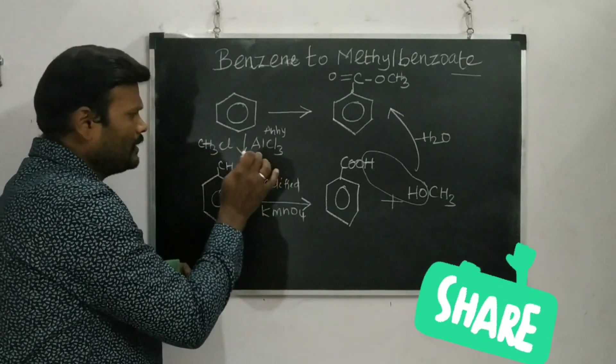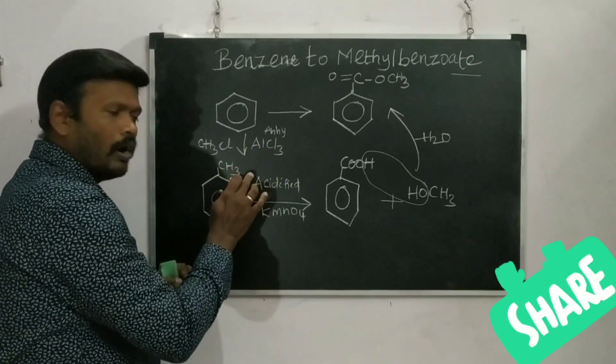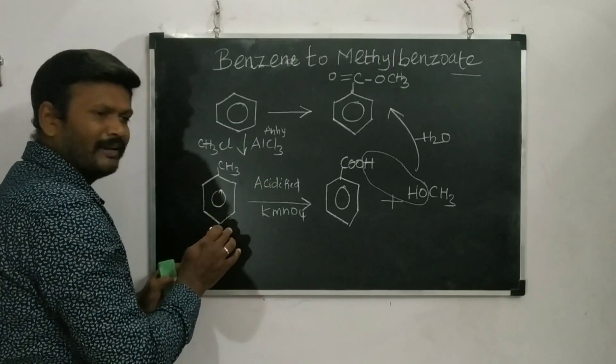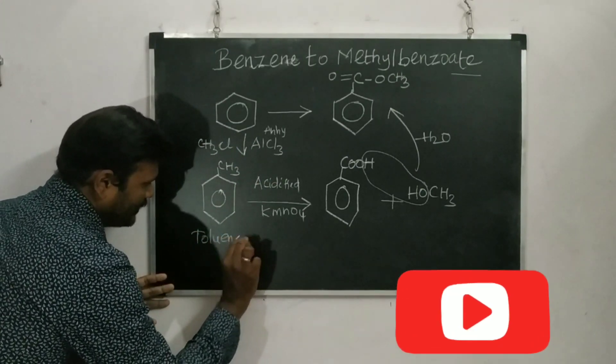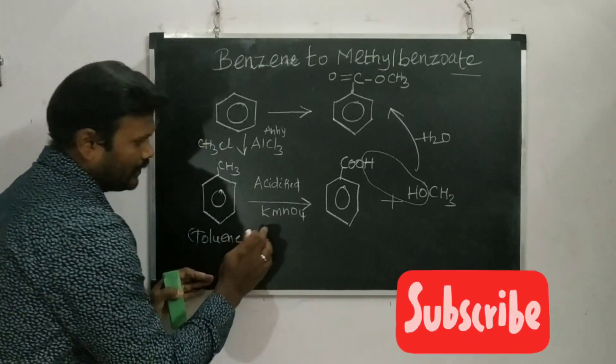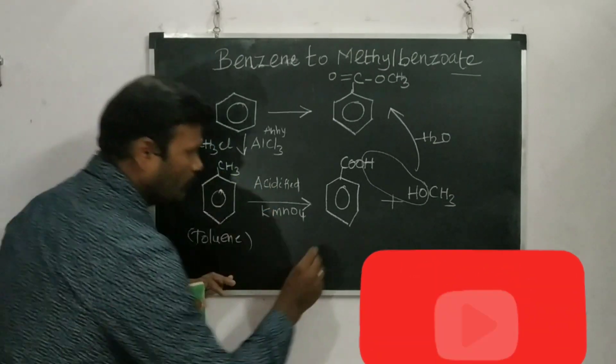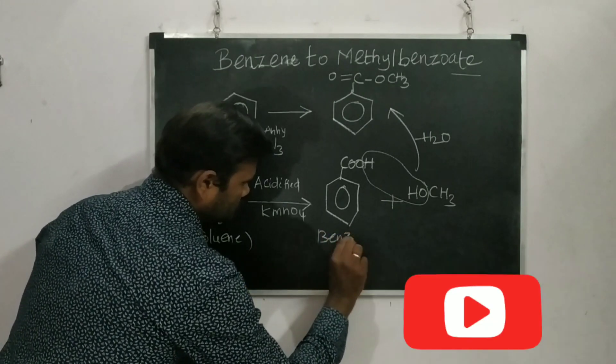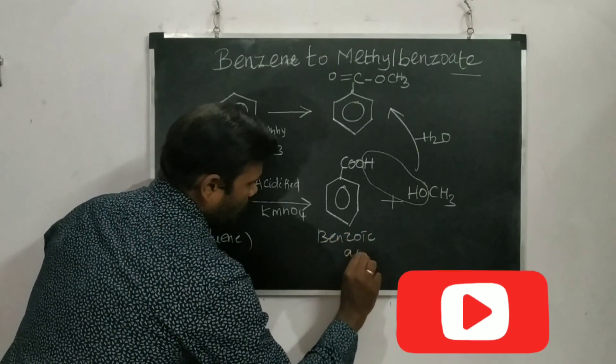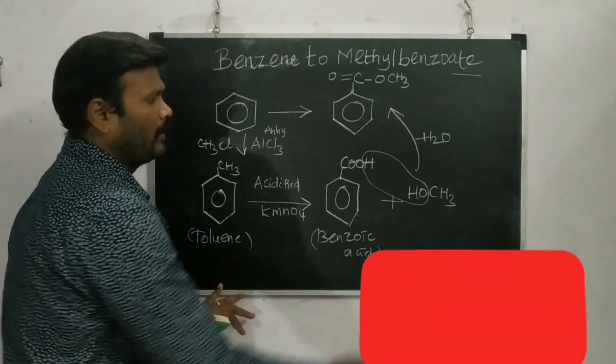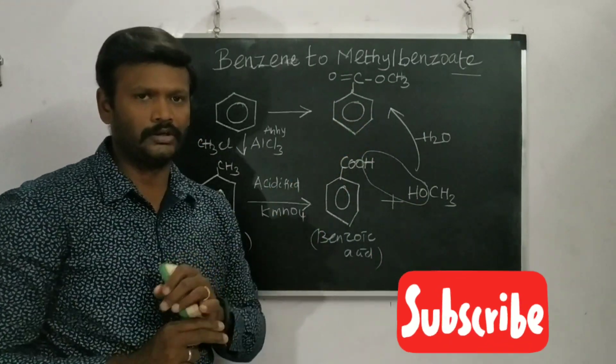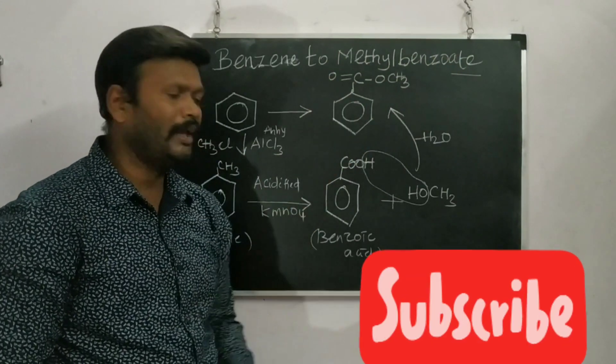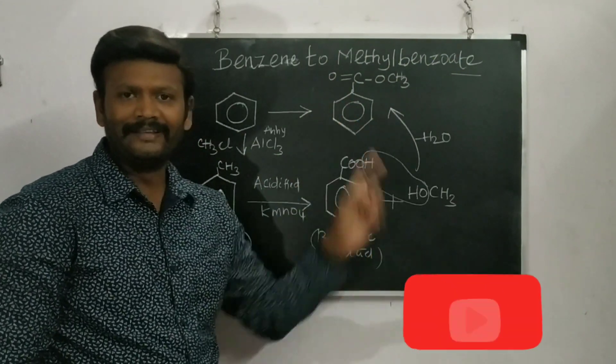So using CH3Cl and AlCl3, if you do alkylation, I will be getting toluene as a product. Once I got toluene, that can be oxidized with acidified K-permanganate, I will be getting benzoic acid. Once I got benzoic acid, it will be reacting with an alcohol to form the respective ester, which is methylbenzoate. Now my target is achieved.